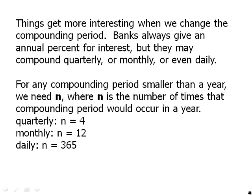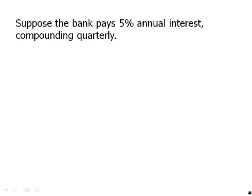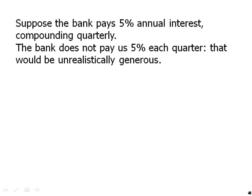Technically, we'd be compounding 365 days during a regular year and 366 during a leap year, but let's not worry about that — the test is not going to ask you to distinguish leap years from regular years. Suppose the bank pays 5% annual interest compounding quarterly. The bank does not pay us 5% each quarter — that would be unrealistically generous.